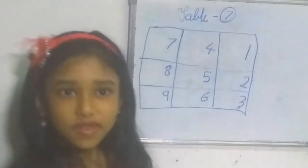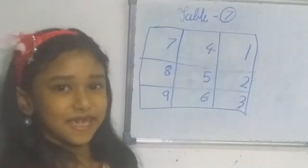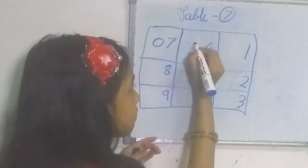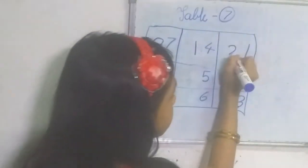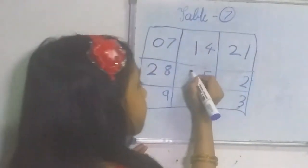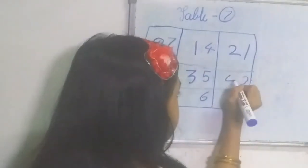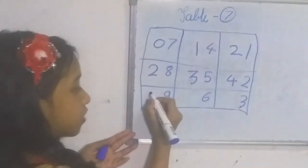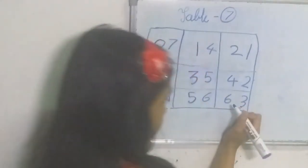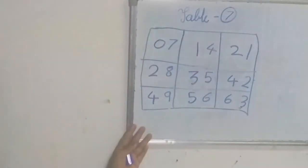Then, now the magic starts. Here we have to write zero, one, two. Then again, two, three, four, continue, four, five, six.